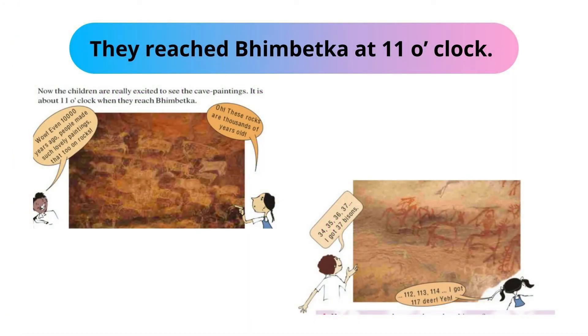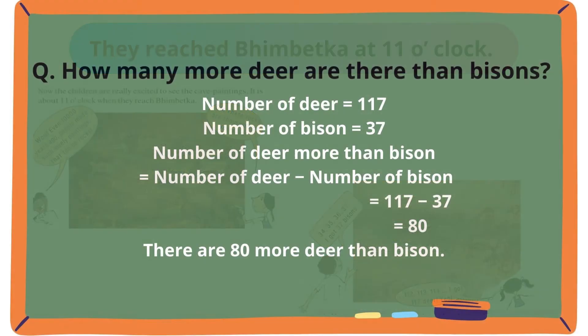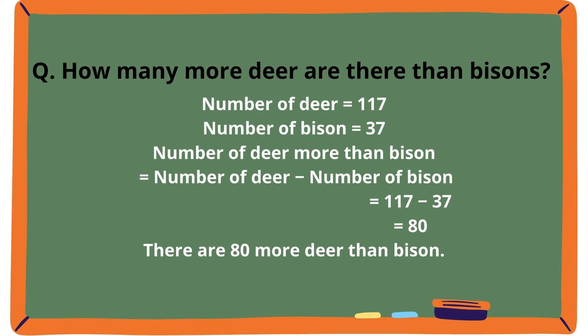They reached Bhimbetka at 11 o'clock. The children are really excited to see the cave paintings. How many more deer are there than bisons? Number of deer is equal to 117. Number of bison is equal to 37. Number of deer more than bison is equal to 117 minus 37, which equals 80. There are 80 more deer than bison.